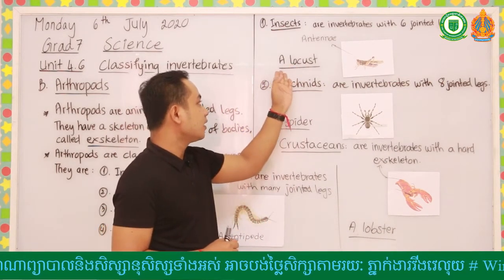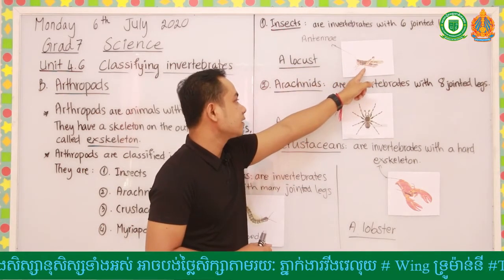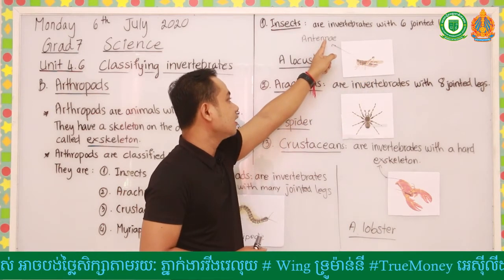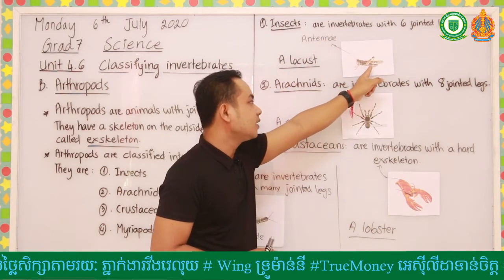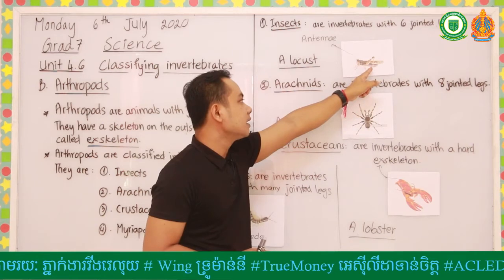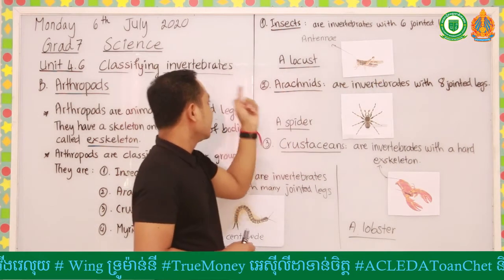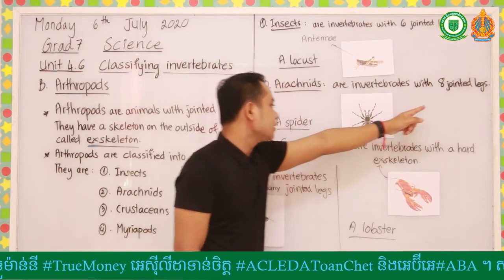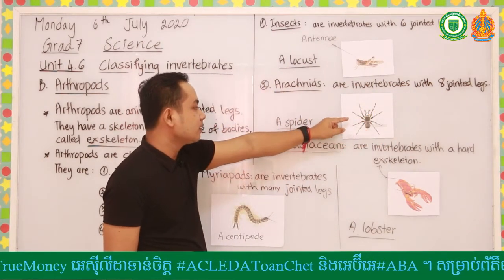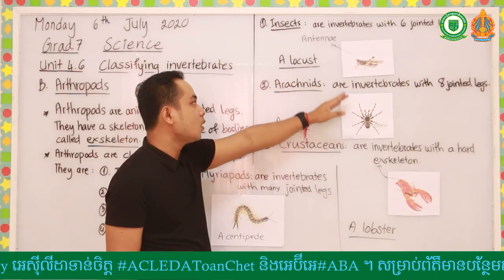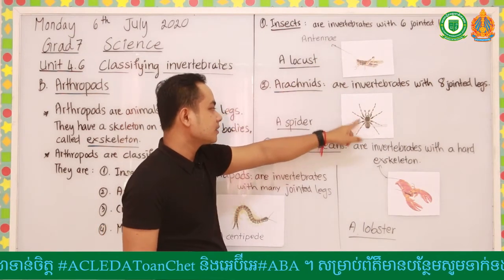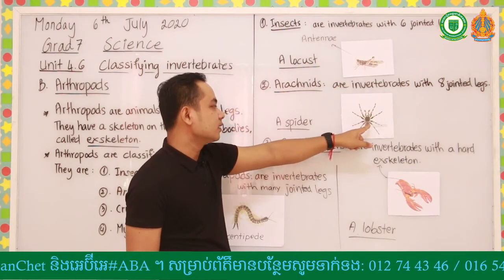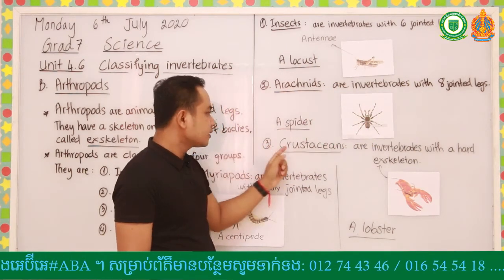You can see a locust right here - it has six jointed legs with the body, a pair of antennae, a pair of wings, and the body is segmented. Arachnids are invertebrates with eight jointed legs. You can see a spider right here - it has no wings, no antennae, but it has eight legs jointed with the body, and the body is not segmented.